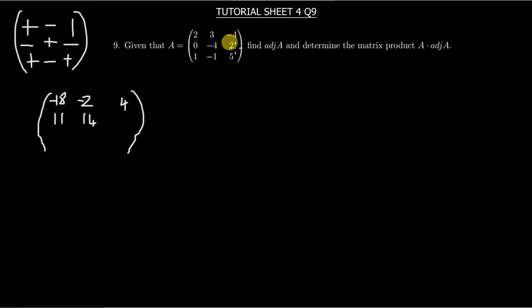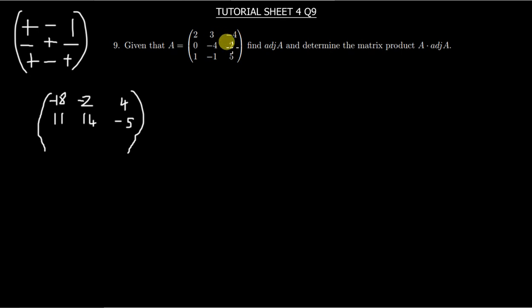You find negative 5 for the next minor. Then closing that row and column, you get 3 times 2 which is 6, and then 6 minus negative 4 times negative 4 — that's 6 minus 16 — which gives negative 10. Continuing, you get 4 for the next entry, then positive 8 for the last entry.